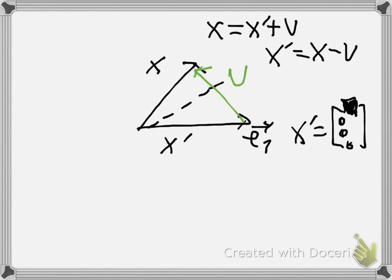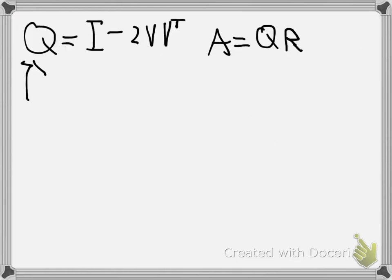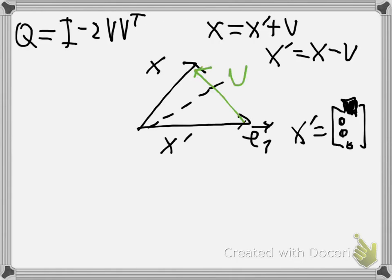Our goal is to finally find this formula: Q equals the identity matrix minus 2 times v v transpose.